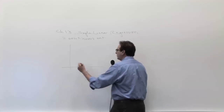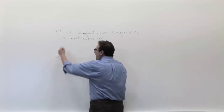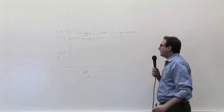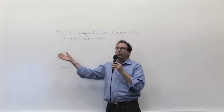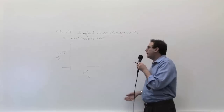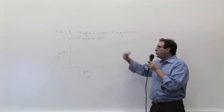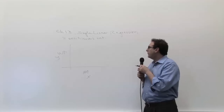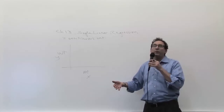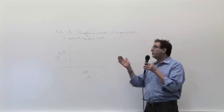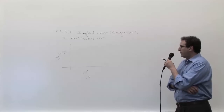The height variable is the X variable, and the weight variable is the Y variable — the traditional vertical Y axis. What we'd like to do is talk about the relationship between height and weight. As a business example, we'll also use advertising and sales: the more advertising you put into a company, the more sales you might get. The question is whether there really is a relationship between those two variables.